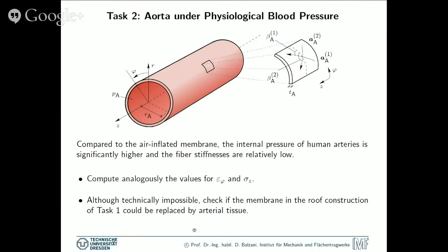Task two basically considers the calculation of an aorta under physiological blood pressure. So here you see a sketch of this idealized healthy artery. Certain parameters are also given in the detailed task description. What we notice is that first the internal pressure inside these human arteries is significantly higher compared to the internal pressure in the air dome that we considered one slide before. On the other hand, the fiber stiffness is relatively low compared to the textile membrane. So the question now is how does this structure behave due to the internal pressure? Therefore, you are first asked to compute in the same way basically analogously to task one, the values for epsilon phi and sigma z.